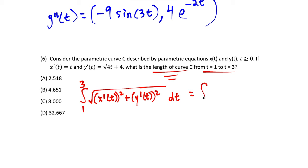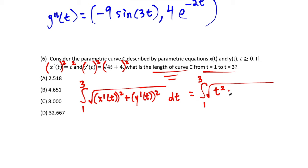Squaring x prime of t gives t squared. Squaring the second equation gives plus 4t plus 4. So we have the integral from 1 to 3 of the square root of (t squared plus 4t plus 4) dt. This trinomial is a perfect square: it factors as (t plus 2) squared under the square root.